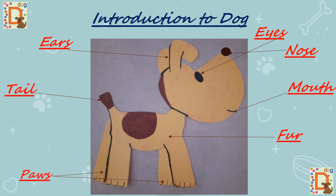Introduction to dog. Children, now let's point out and name the body parts of the dog. Dogs have two ears, two eyes, one mouth, one nose, a lot of fur on the body, four paws, and one tail. You can see all these body parts named over here — we will look at them one by one.